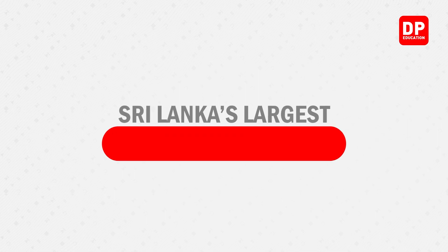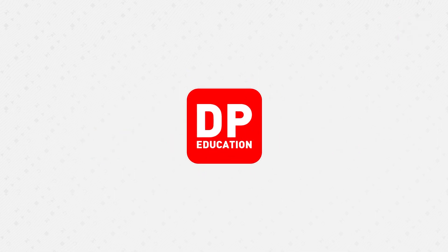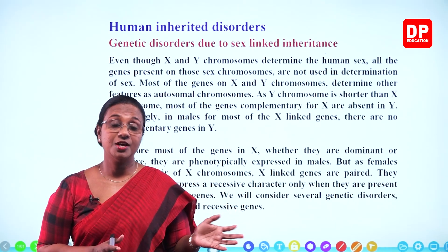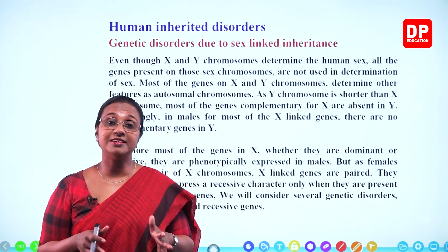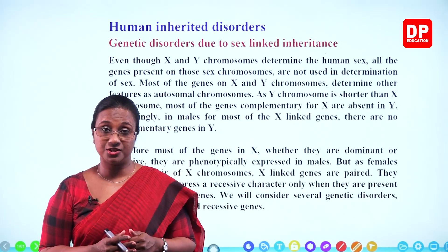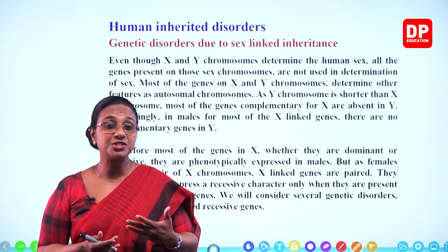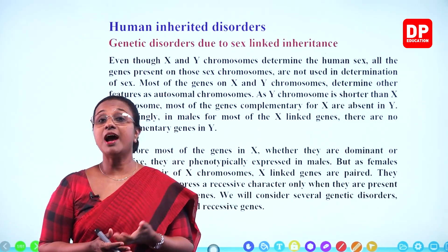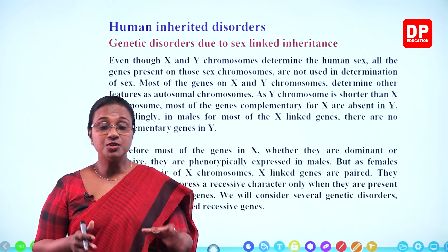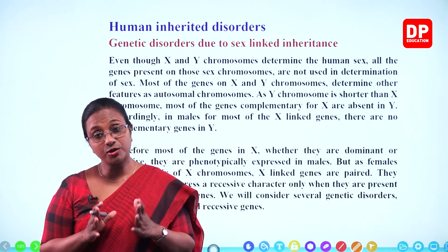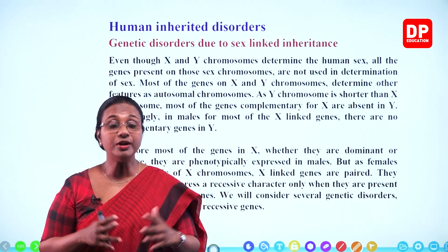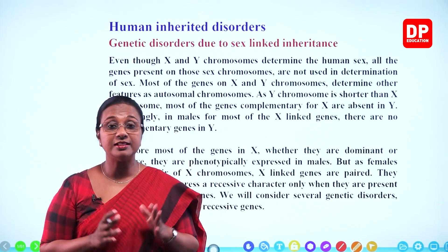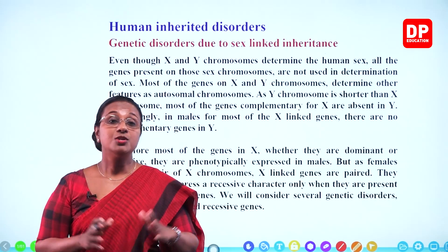Hello, my dear students. Welcome to today's lesson. I'm going to continue the lesson on inheritance. We started off by discussing characters inherited in the human population — common inherited characters like the nature of hair, complexion, thumb shape, dimples, earlobes. We also discussed rare inherited characters like syndactyly and polydactyly. Gregor Mendel, the father of genetics, carried out experiments on inheritance using the garden pea plant, Pisum sativum.